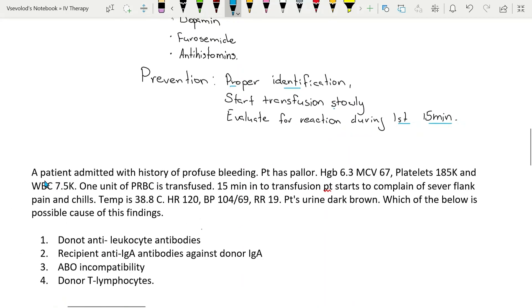Let's look at a small vignette. A patient admitted with history of profuse bleeding. Patient has pallor, hemoglobin is 6.3, MCV 67, platelets 185,000 and white blood cell count 7,500. One unit of packed red blood cells is transfused. Within the first 15 minutes into the transfusion, patient starts to complain of severe flank pain and chills. Temperature is 38.8, heart rate 120, blood pressure 104 over 69 and respiratory rate 19. Patient's urine is dark brown. Which of the following is a possible cause of these findings?